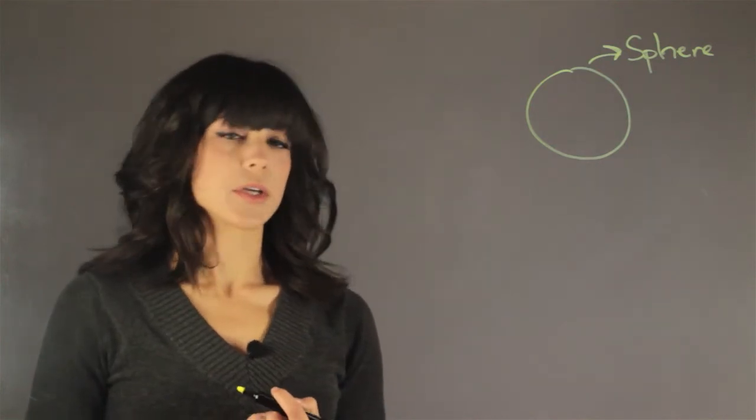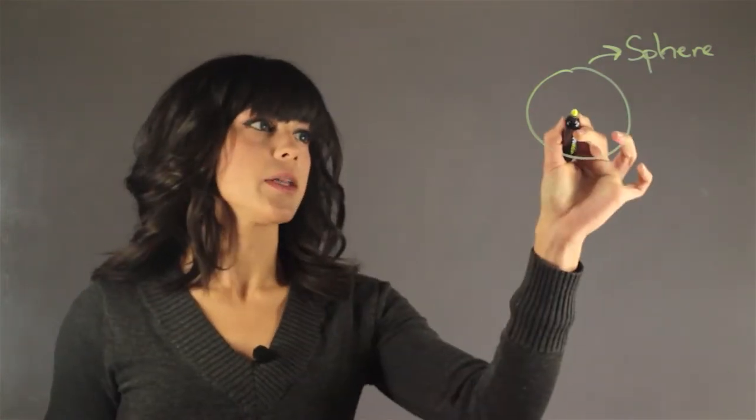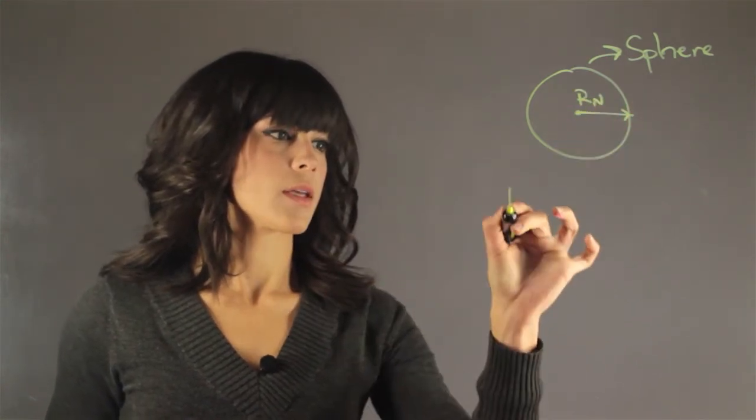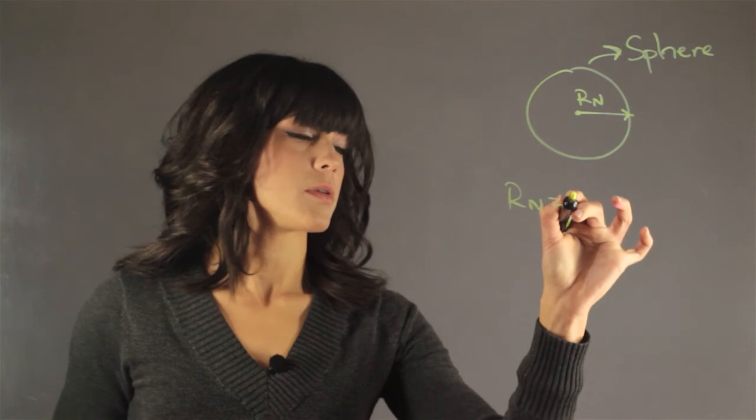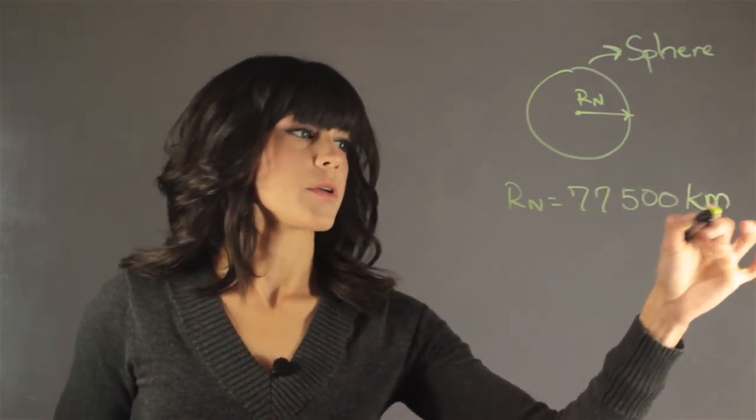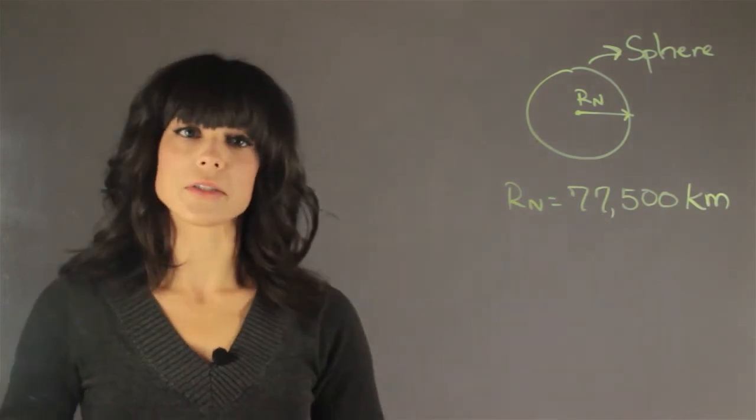And then we're going to talk about how big it is. So the radius of Neptune, this is equal to 77,500 kilometers. Pretty large.